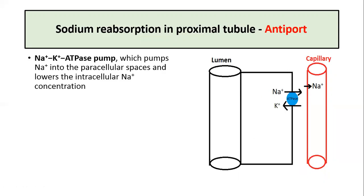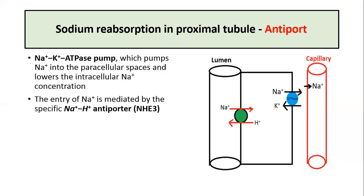Across the apical membrane, sodium moves down the electrochemical gradient and the entry of sodium is mediated by the sodium-hydrogen antiporter. Sodium movement inside the cell occurs in exchange with hydrogen movement into the tubular lumen, so it is also called the sodium-hydrogen exchanger.